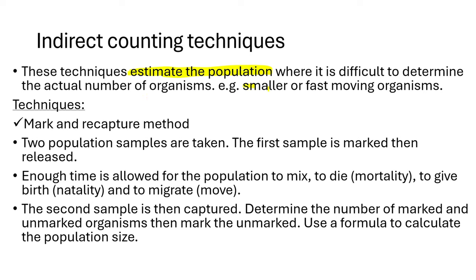These techniques work when it is difficult to determine the actual number of organisms, so we just estimate. For example, with smaller or fast-moving organisms like bees — they are very small, they are many, and they move very fast — it becomes very difficult to count them directly because you cannot stop them from moving. So we use indirect counting techniques. Indirect counting techniques will always apply when you are dealing with smaller populations, insects, or fast-moving organisms.